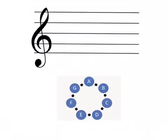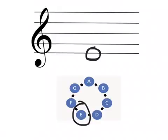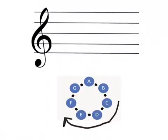Now you are ready to start reading the notes of the treble clef staff. We will start with the bottom line. A bottom line note looks like this, and that note will always be E. When played, it sounds like this. Following our clockwise pattern of the musical alphabet, we can see that the next note is going to be F. The F note sits on the bottom space in the treble clef staff.